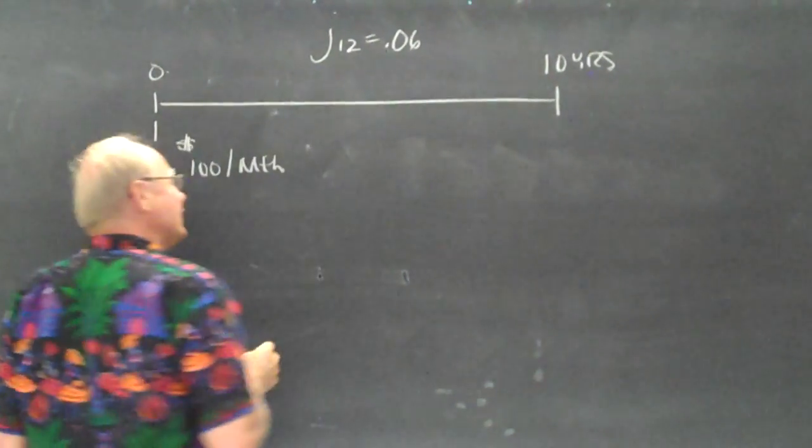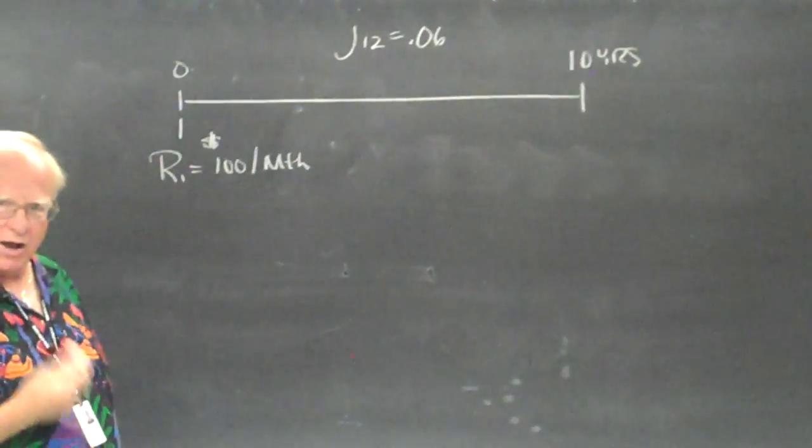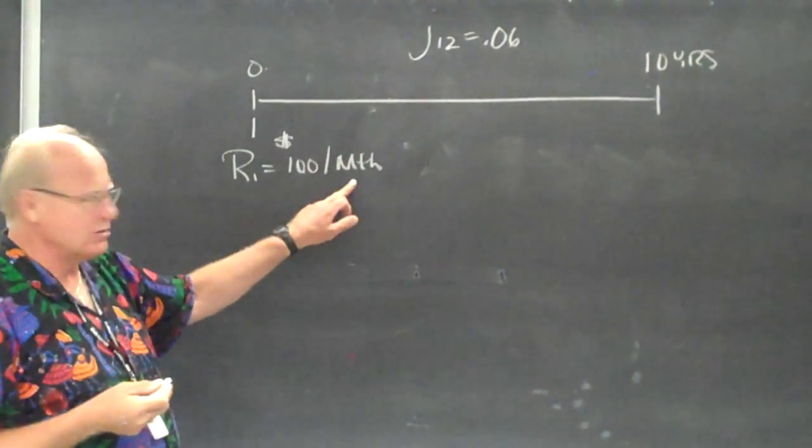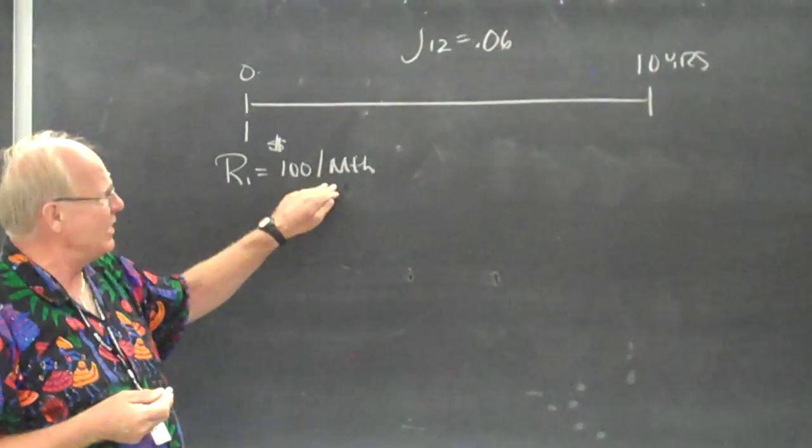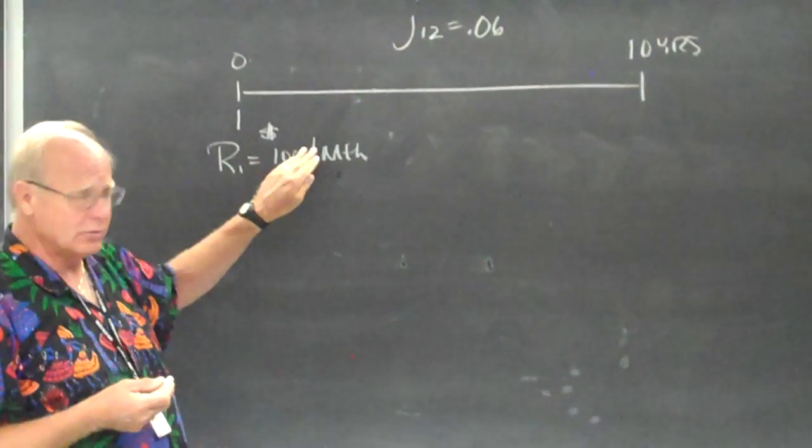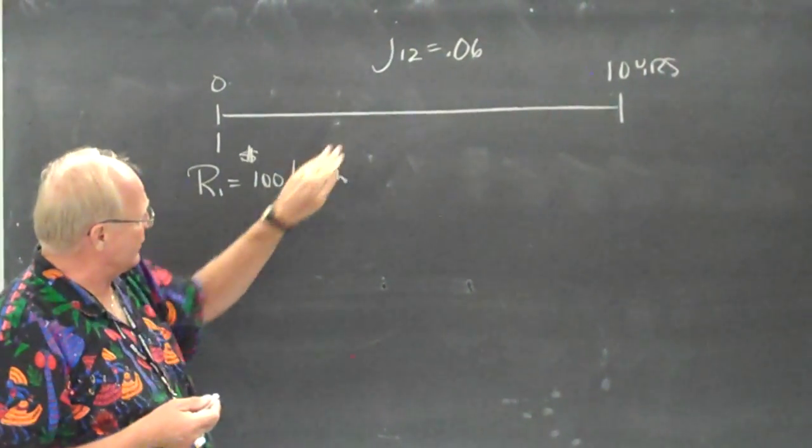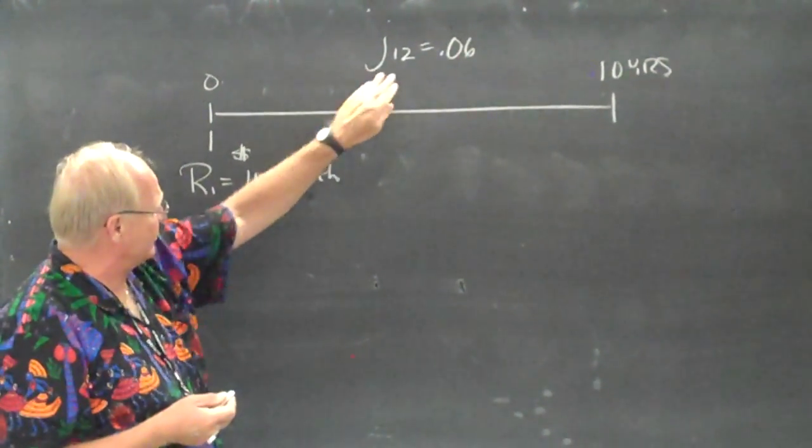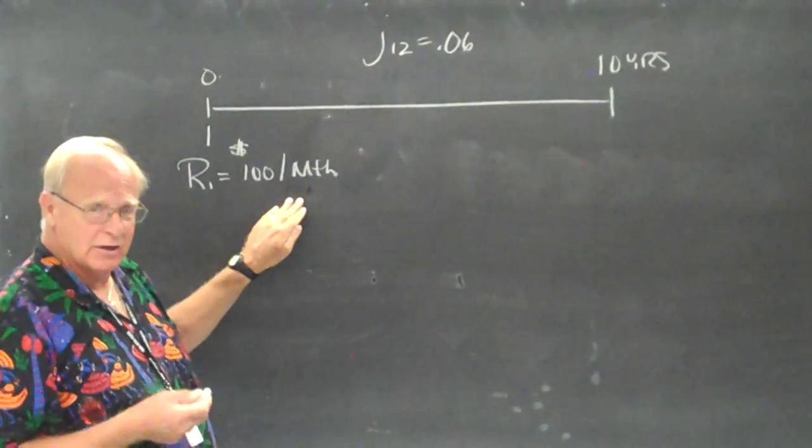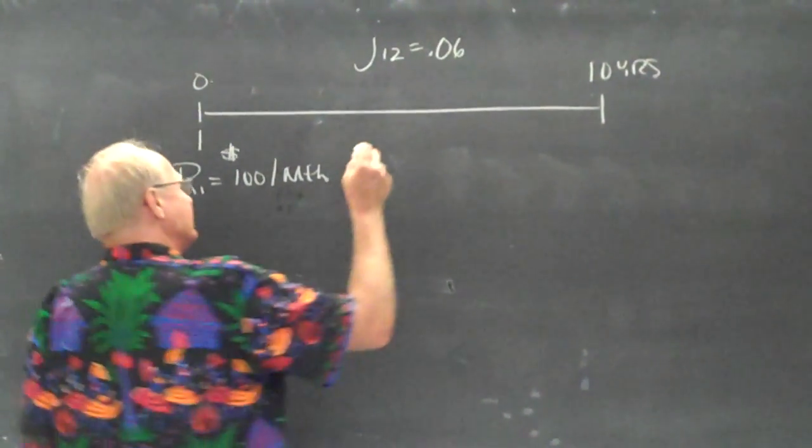Now the simple case, meaning the frequency of compounding interest matches with the frequency of payments. Always match the frequency of compounding interest to the frequency of payments. In this case it's the simple case because it's J12 and it's monthly.